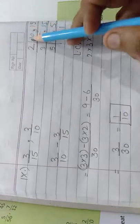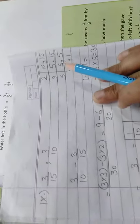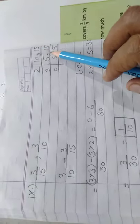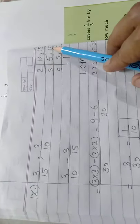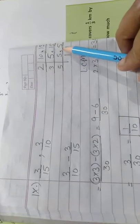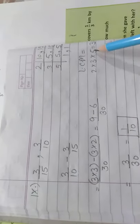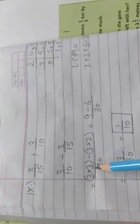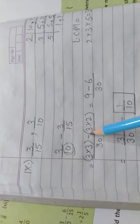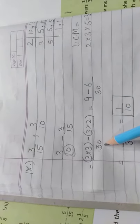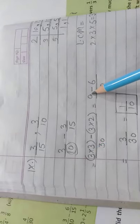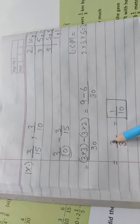We take the LCM of 10 and 15. Dividing by 2: 10 becomes 5, 15 stays as 15. Then dividing by 5: 5 becomes 1, 15 becomes 3. Then dividing by 3: 3 becomes 1. So LCM = 2 × 5 × 3 = 30. Common denominator is 30. For 3/10: 30 divided by 10 is 3, so numerator = 3 × 3 = 9. For 3/15: 30 divided by 15 is 2, so numerator = 3 × 2 = 6. Answer: 9 minus 6 = 3, so 3/30.